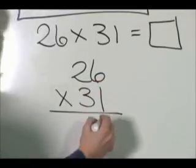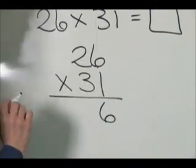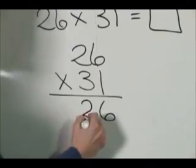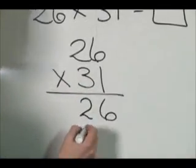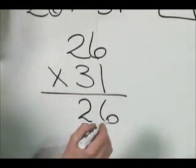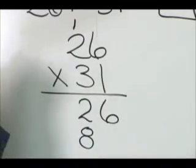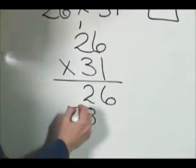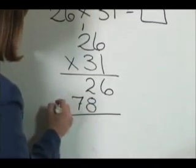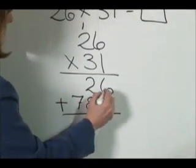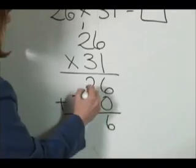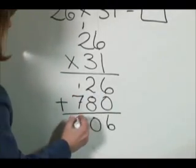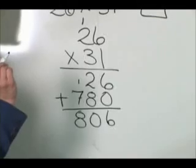The standard algorithm goes like this. One times six is six. One times two, although it's not a two, it's a twenty, is two or twenty. Three times six is eighteen. Eight. And then we carry the one. Three times two is six plus one is seven. And we do the addition. Sometimes we put a zero here. Six. Eight and two is ten. Carry the one or the hundred. And the answer 806.